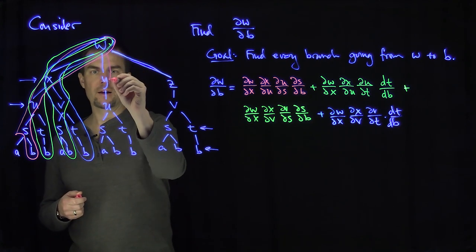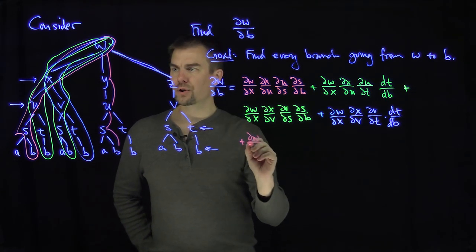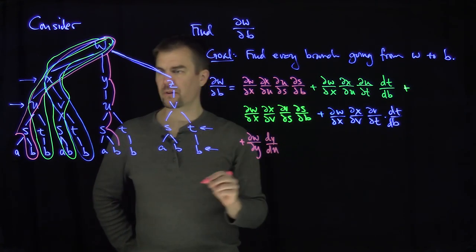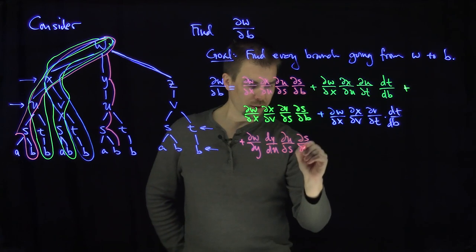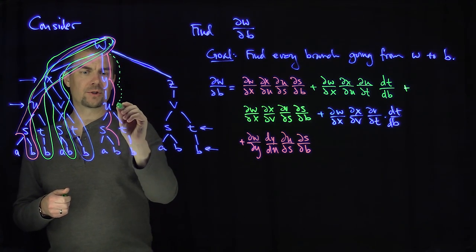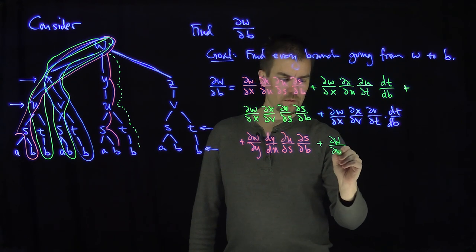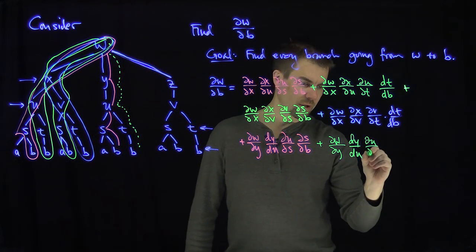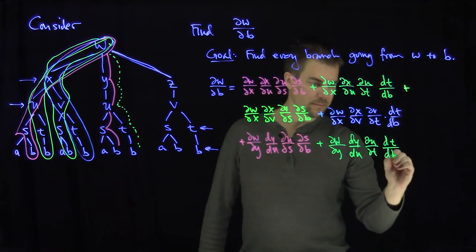We can also go through the y branch. The trajectory w→y→u→s→b gives: plus partial w partial y, times dy du (an ordinary derivative since y is a function only of u), times partial u partial s, times partial s partial b. The trajectory w→y→u→t→b gives: plus partial w partial y, times dy du, times partial u partial t, times dt db.